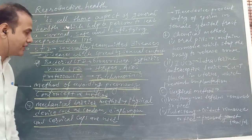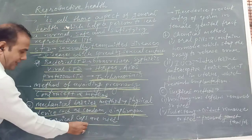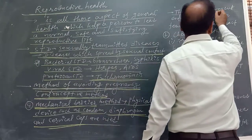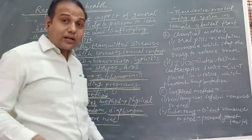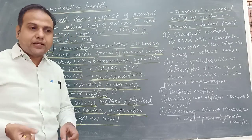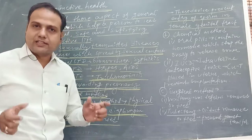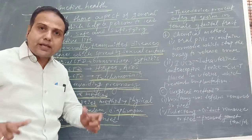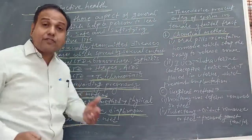So, examples of mechanical or physical barriers are: condom used by the male partner, and diaphragm and cervical caps used by the female partner. The main concept behind the physical barrier is that the male gamete — the sperm — does not enter the female genital tract. Now the second method is the chemical method.